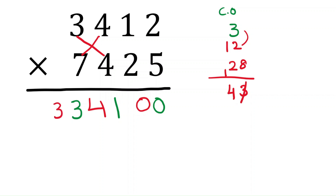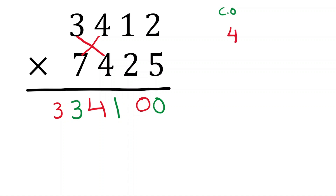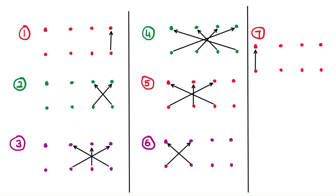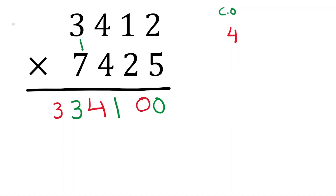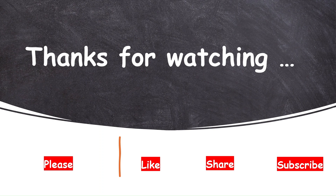Step seven: multiply all thousands together. Three times seven is twenty-one, and the carryover is four — that gives twenty-five. Write 25. The final answer is 25,334,100. If you like the video, please like, share, and subscribe for more videos.